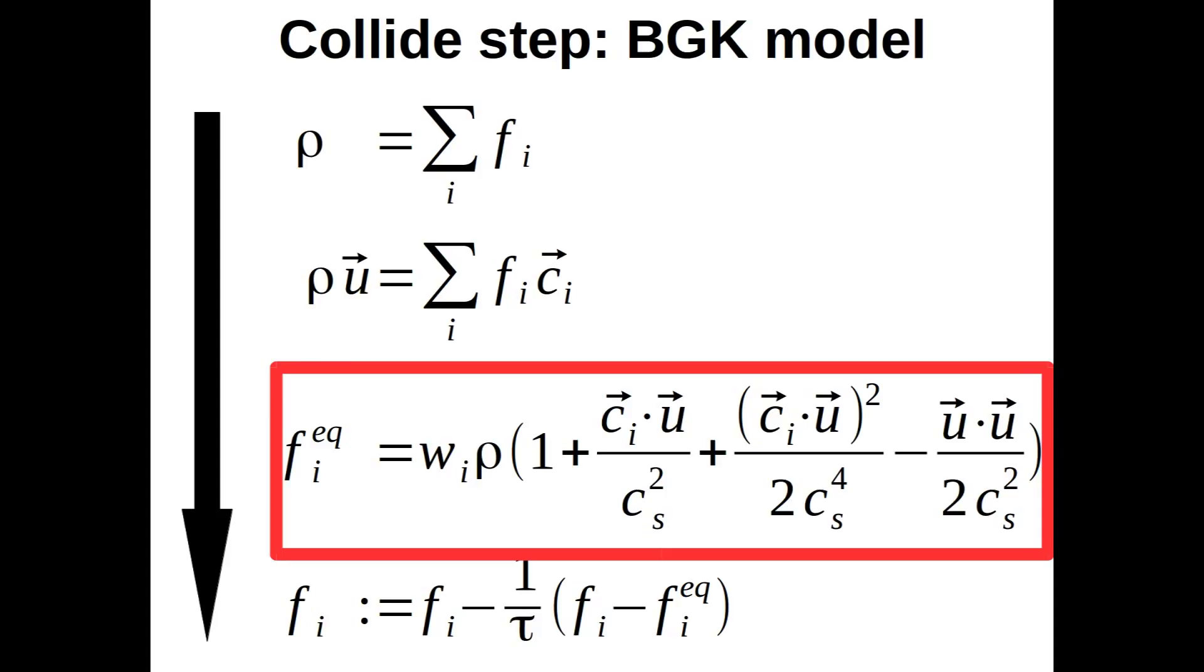Computing mass and momentum from the equilibrium distributions returns the same values for rho and U as if we used F0 to F8. This is basically due to a clever choice of our lattice weights Wi.